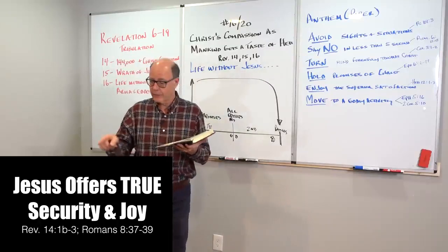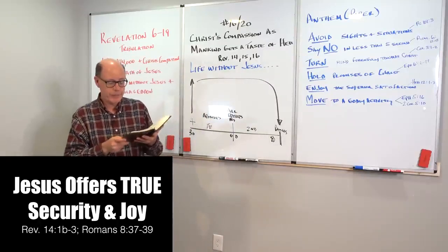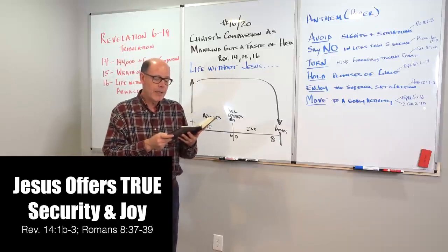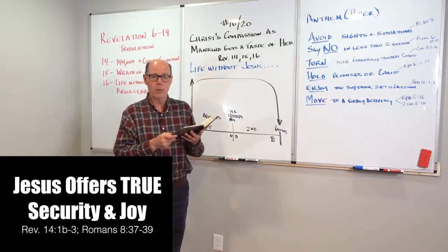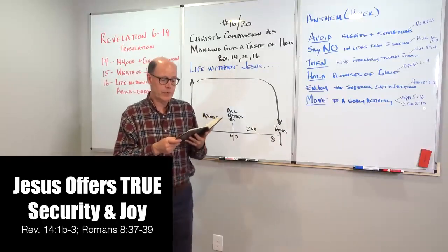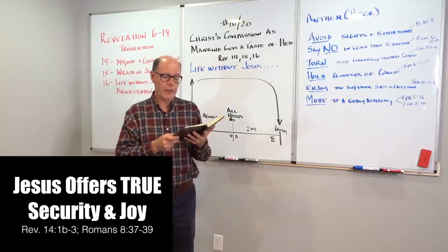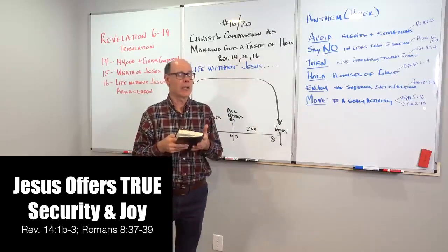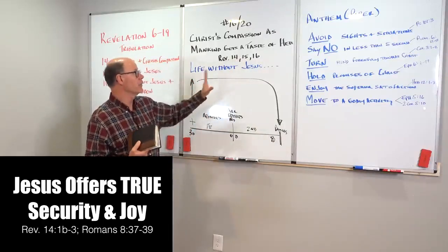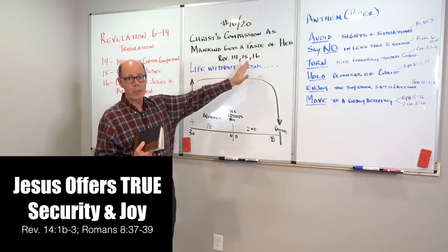And it says - see on the slide - Romans 8, 37 to 39, yet in all these things - all what things? Well, look at verse 36, we're killed all the day long. We're accounted as sheep for the slaughter. That's what's going on in the tribulation period. In this time, people are being martyred.